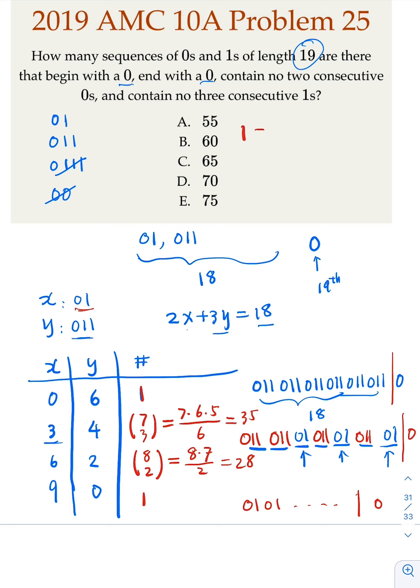So you have 1 plus 35 plus 28 plus 1. That equals 65. That's the answer. So that's the solution to the problem. Thank you.